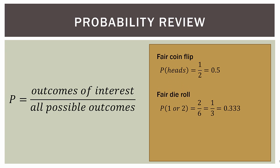How about rolling a fair die? What's the probability of rolling a one or a two? That's two outcomes of interest divided by six possible — one, two, three, four, five, or six. That's one over three, or a probability of 0.333, or one third.